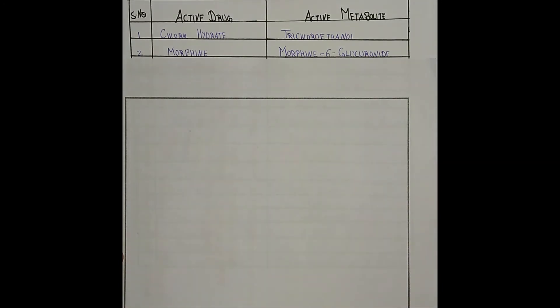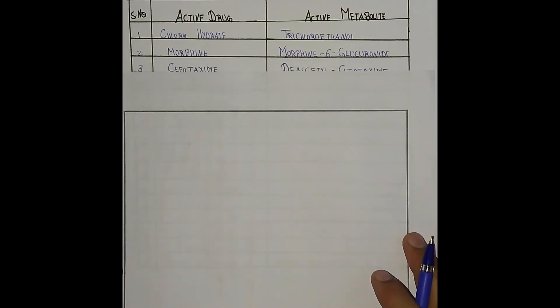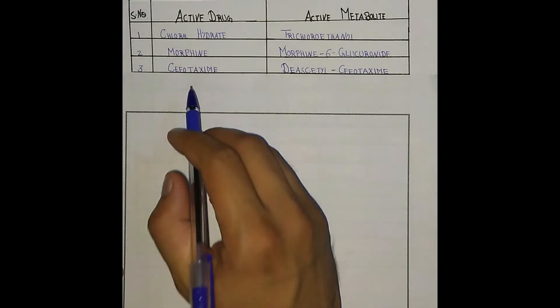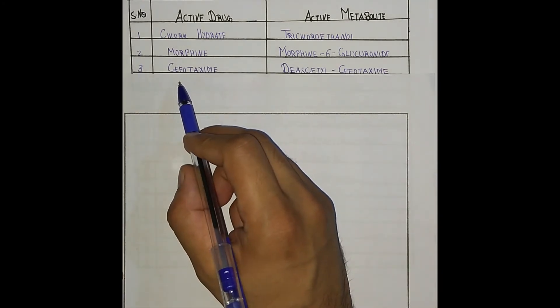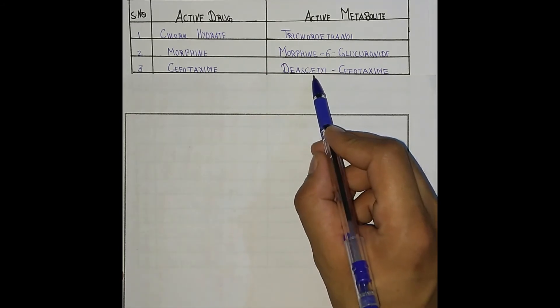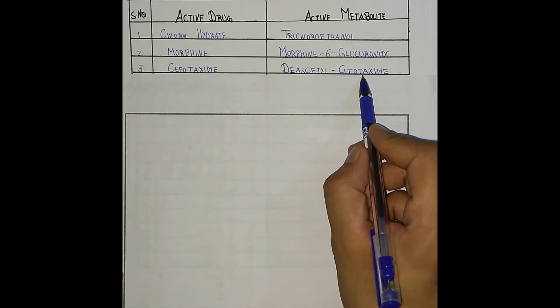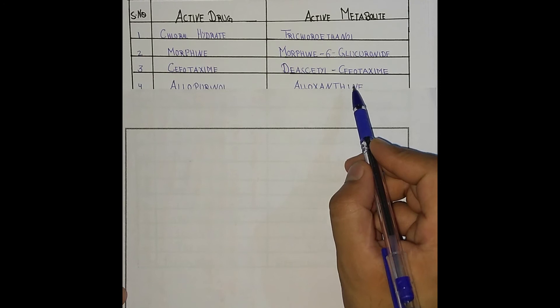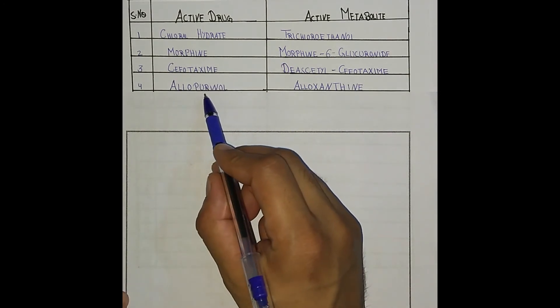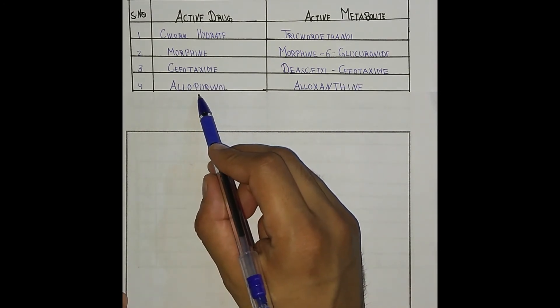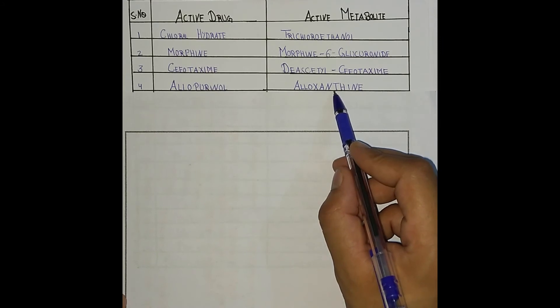Next one is cefotaxime. The active metabolite of cefotaxime is desacetyl cefotaxime. And next one is allopurinol. Allopurinol has an active metabolite which is alloxanthine.